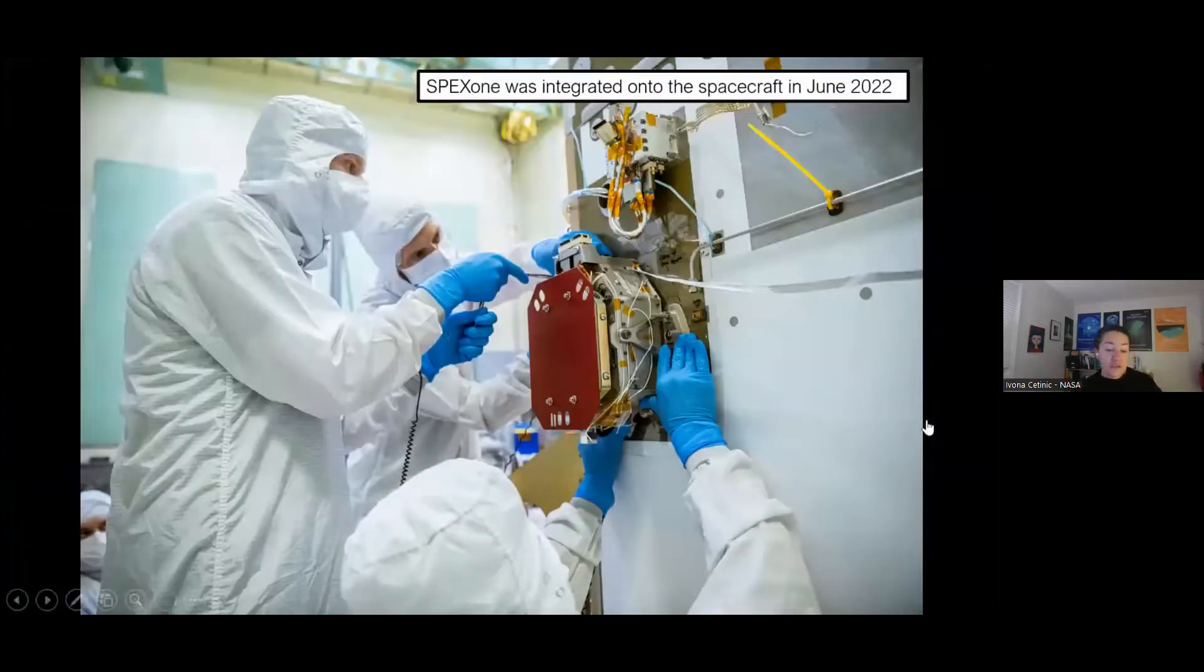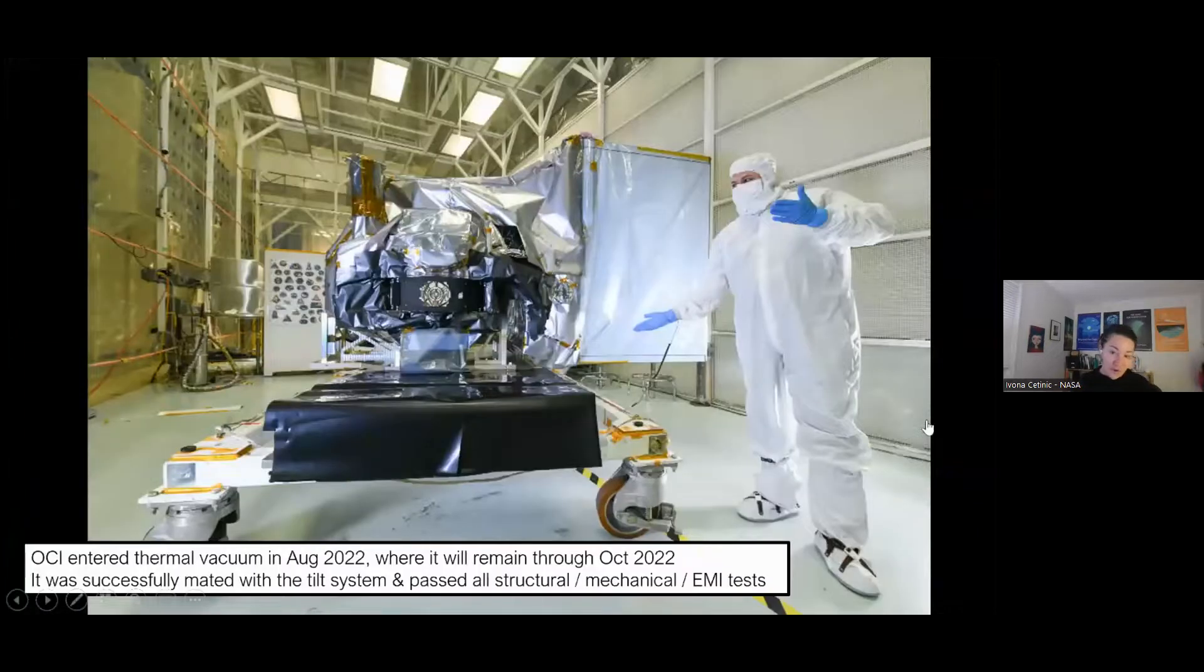So the first instrument that got put on the platform is SPEXone, and this is one of those polarimeters that I was telling you that it's really important for clouds and aerosols. And this is the instrument that came to us from our collaborators in the Netherlands. This instrument is ready to go the same way as PACE is ready, the platform is ready to go.